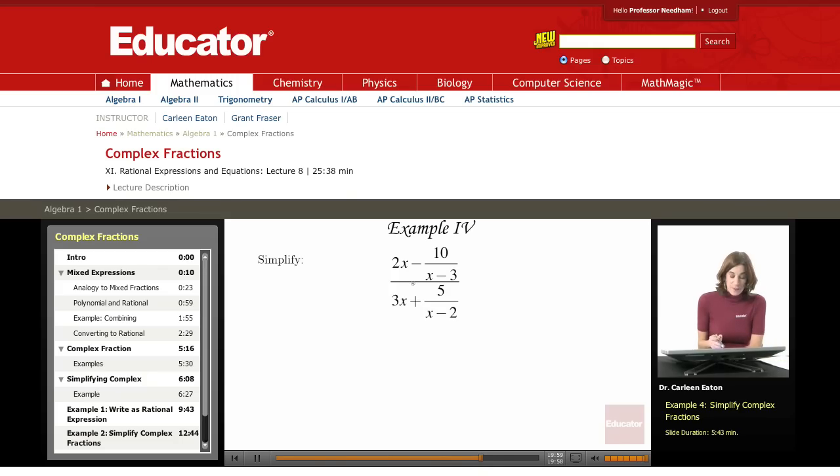In example four, I have mixed expressions and a complex fraction. The way to handle this is to first get rid of this mixed expression. I want to turn this into a rational expression up here and down here so that then I'm just working with the complex fraction.